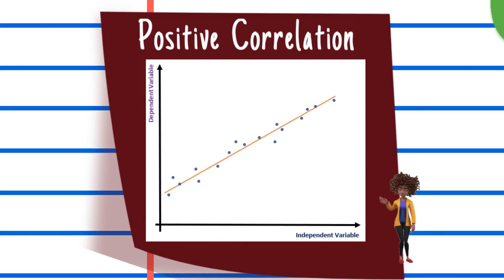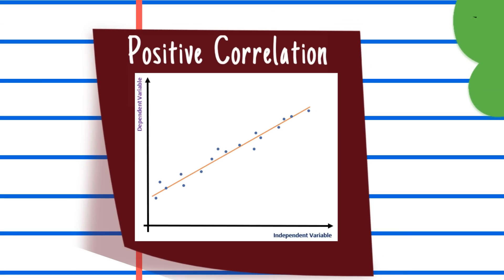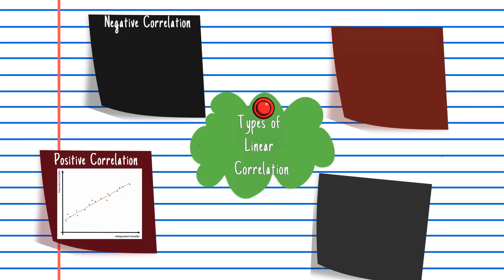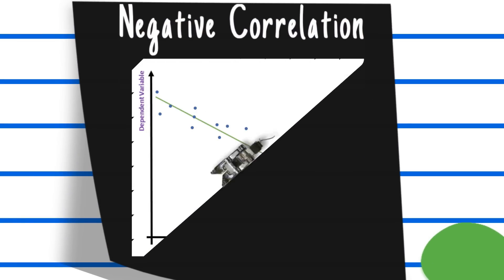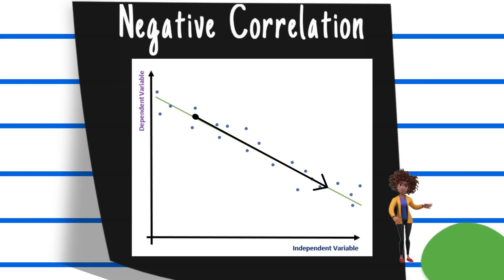Positive Correlation: the points lie close to a straight line which has a positive gradient or slope, showing that as one variable increases, the other also increases. Negative Correlation: the points lie close to a straight line which has a negative gradient or slope, showing that as one variable increases, the other decreases.